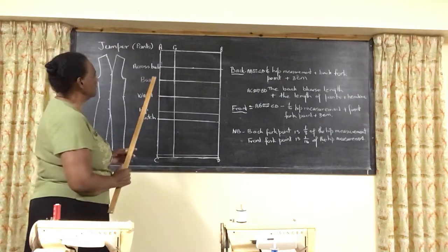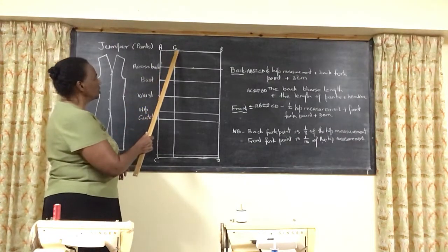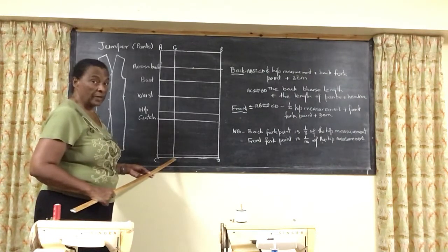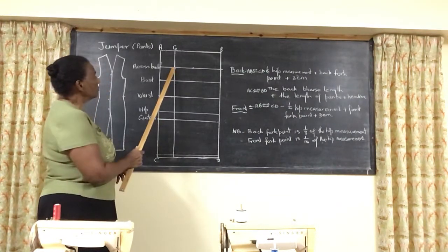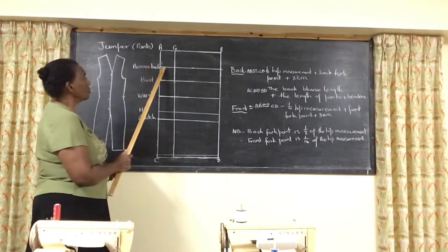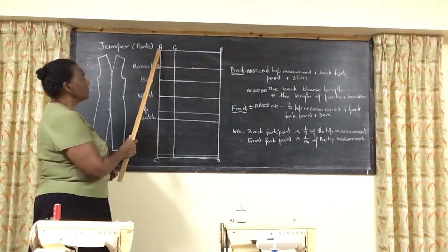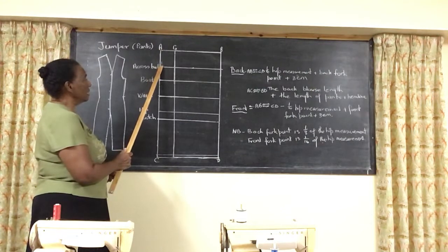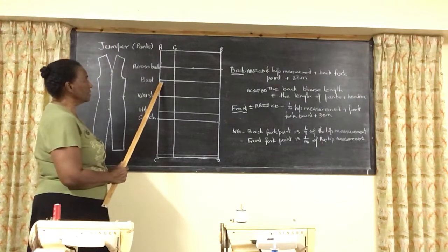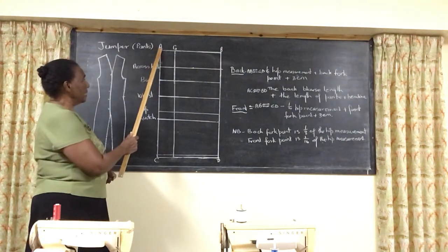Alright, so what I have done here now is that I have put in the G line, which is the line that takes you up to the fork point area. And I have put in all of the construction lines. Remember, your cross back is 15 centimeters down from your AB line. Your bust line is the next line, which is 26 centimeters down from the AB line.